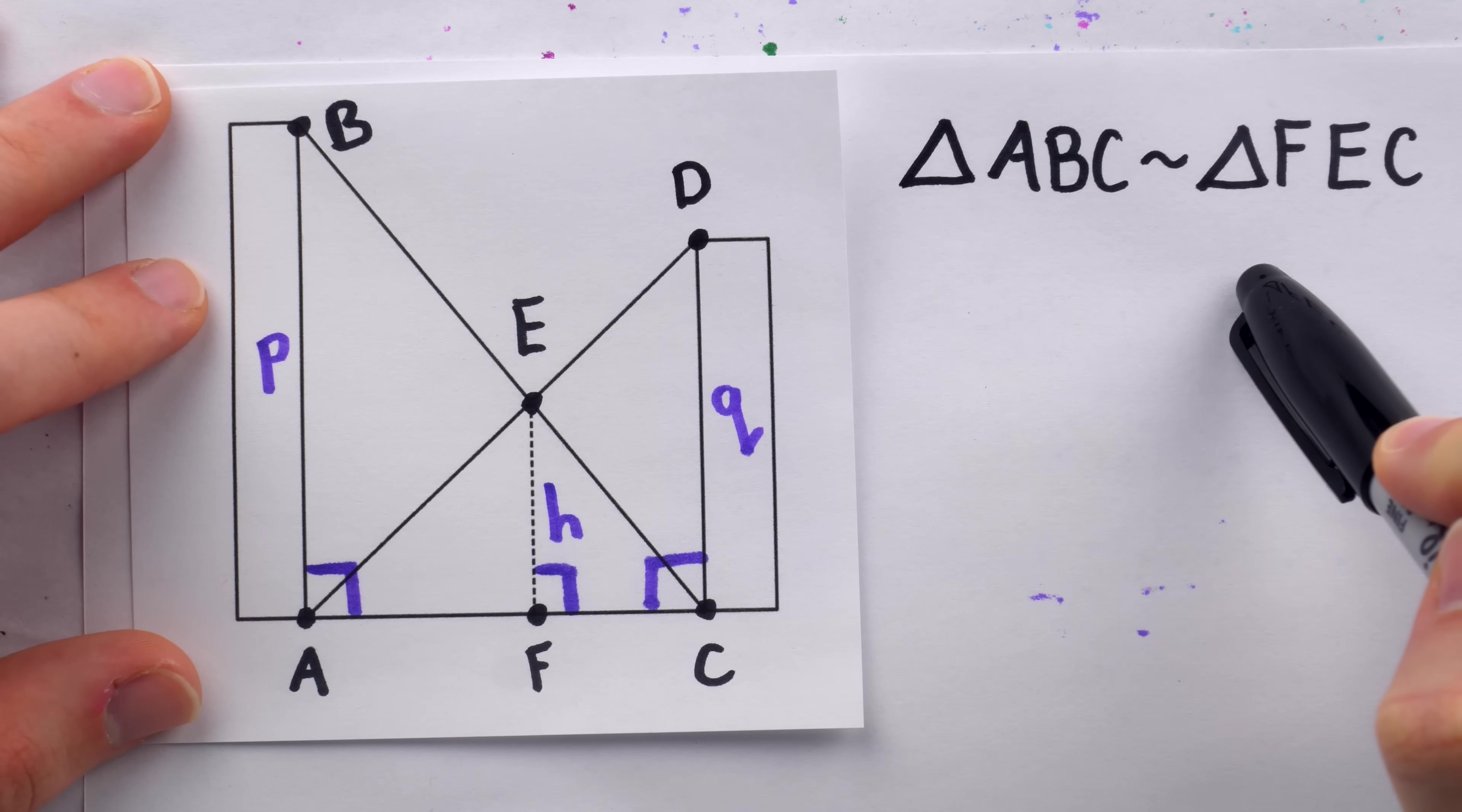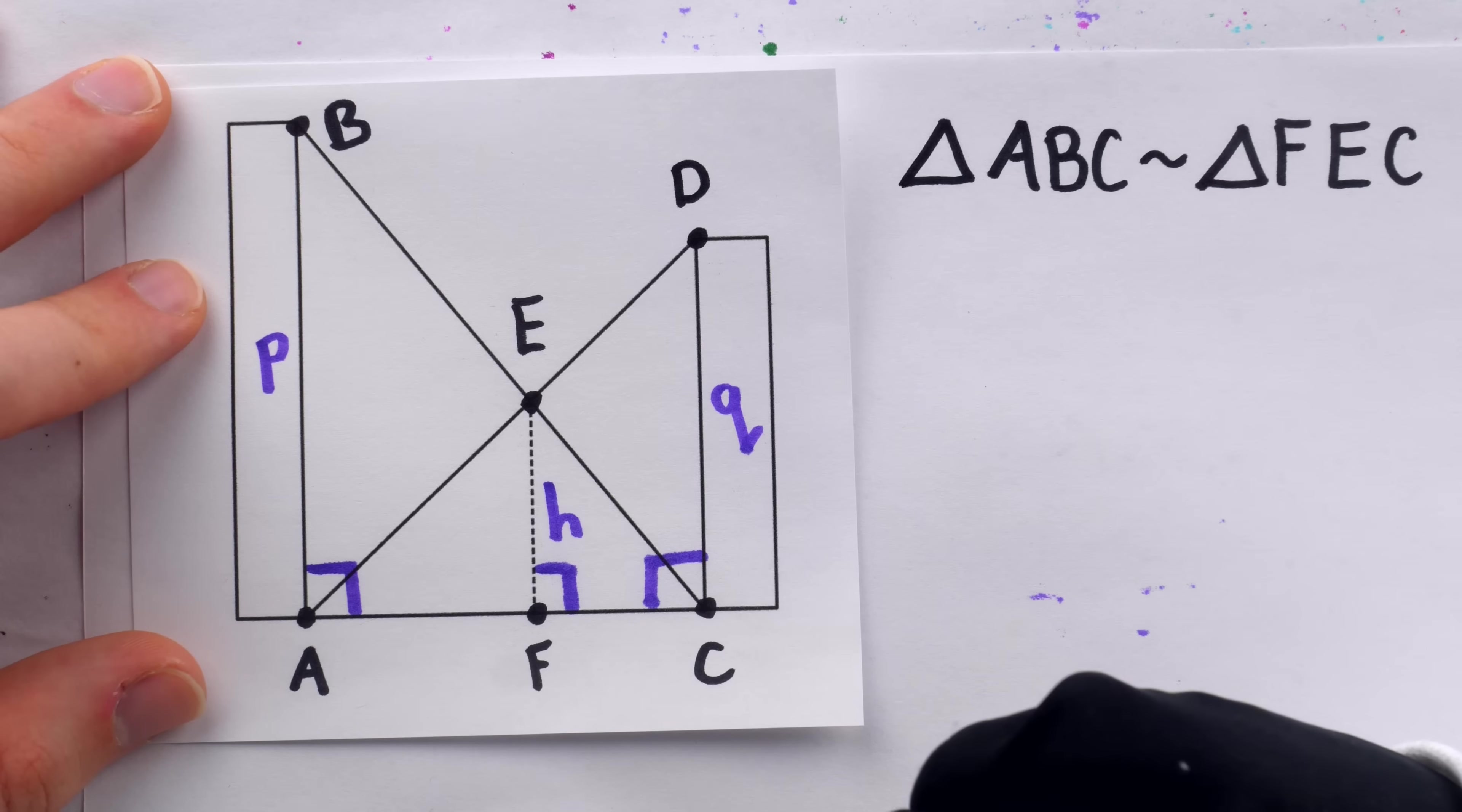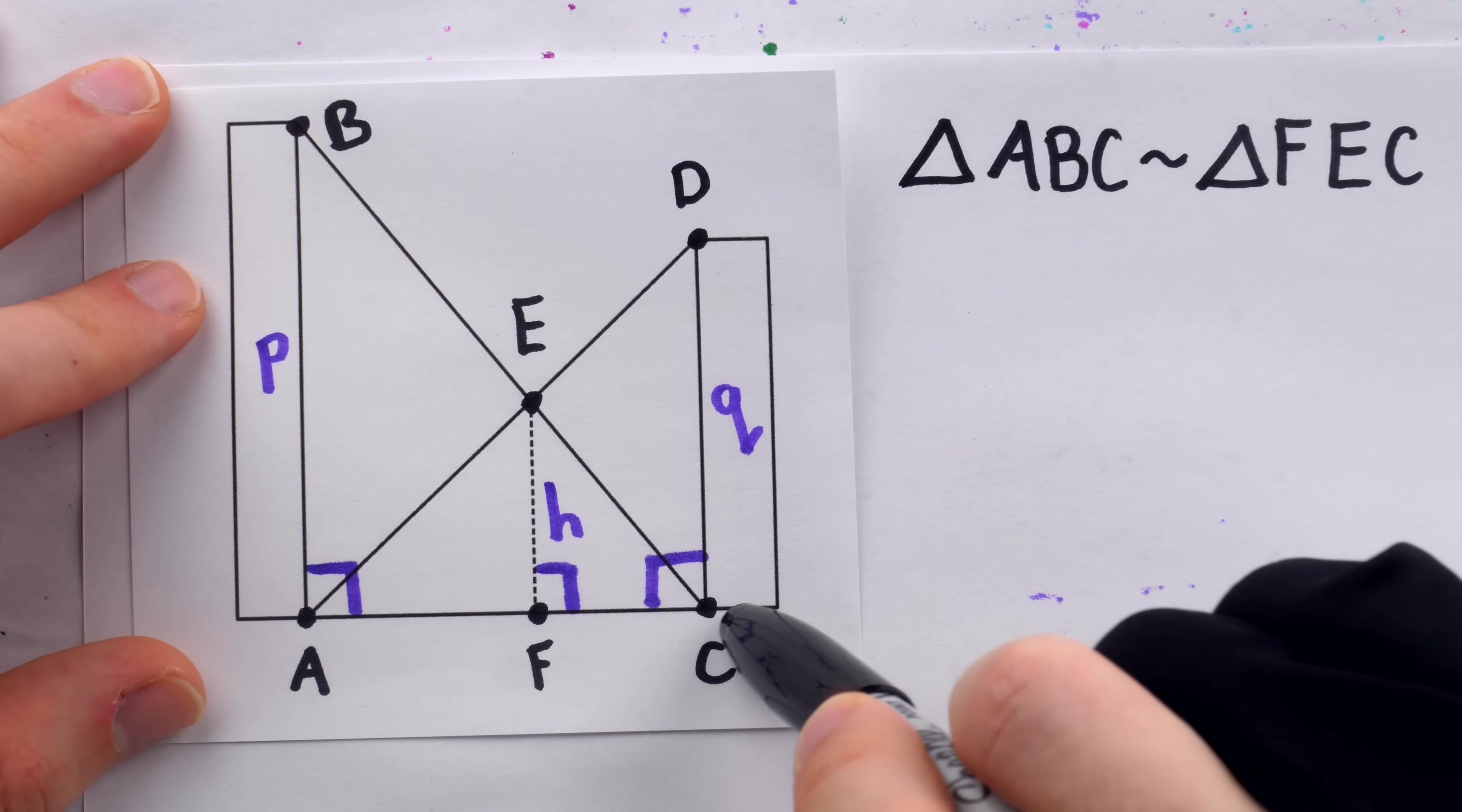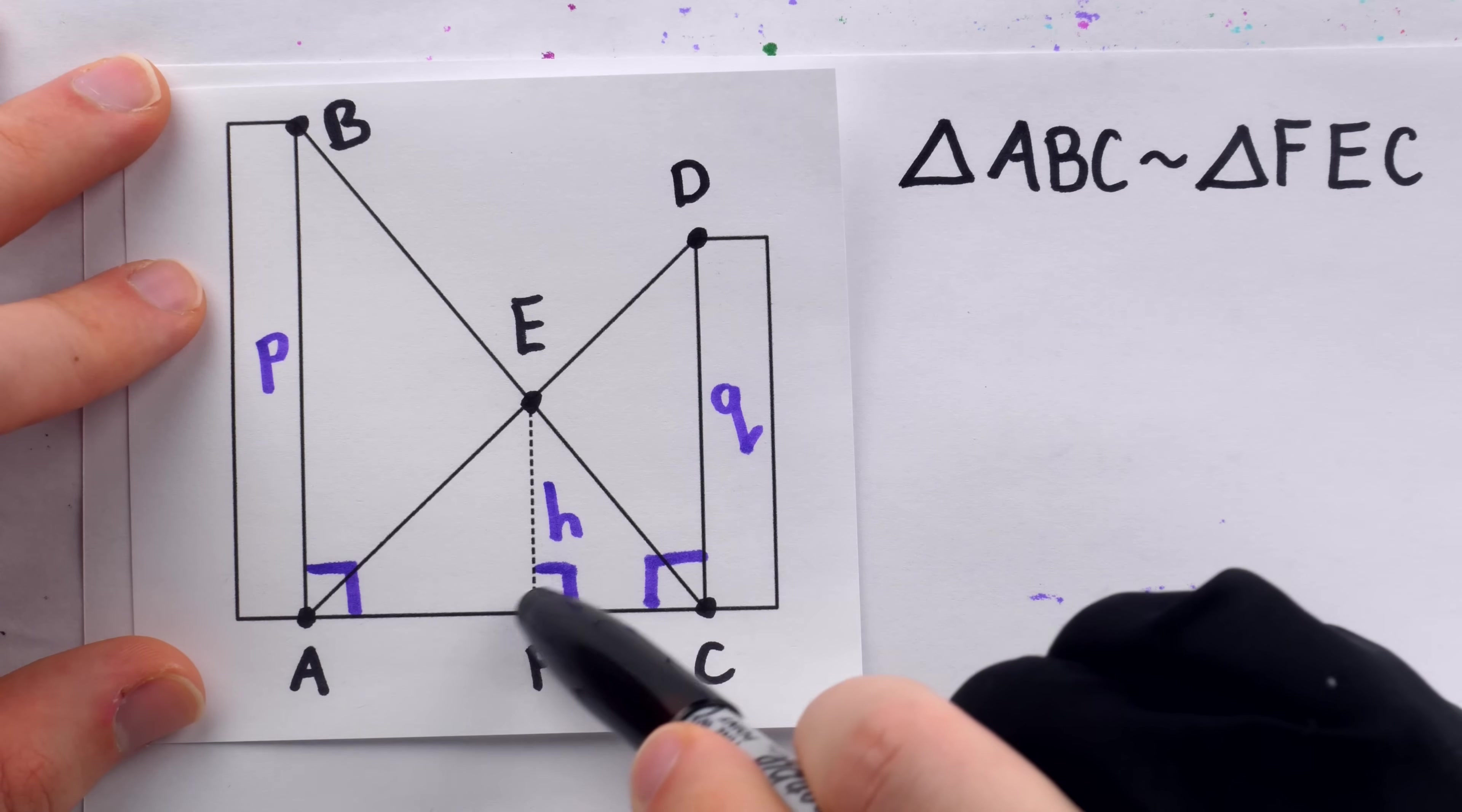By the same reasoning, we have another pair of similar triangles. Indeed, triangle ACD must be similar to triangle AFE.